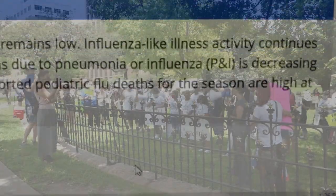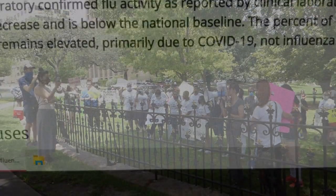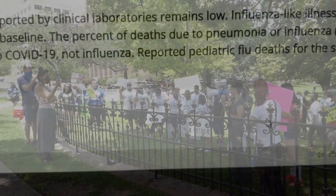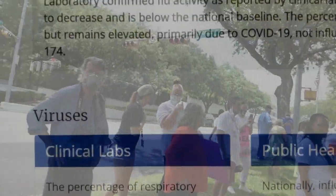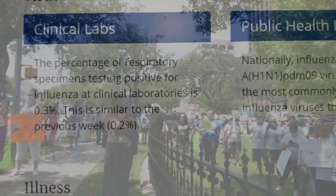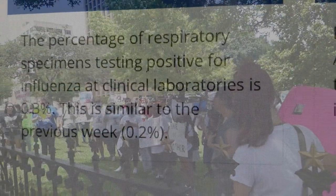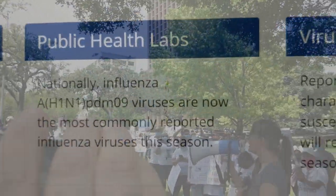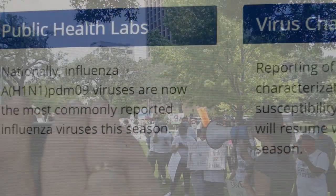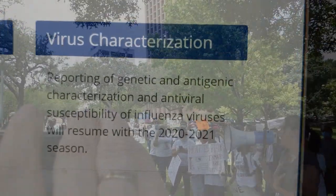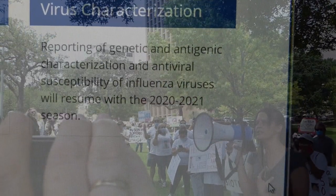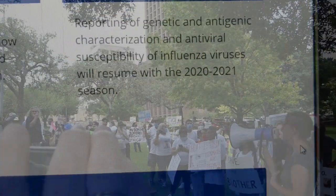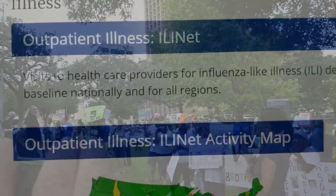The percentage of deaths due to pneumonia and influenza (PNI) is decreasing but remains elevated, primarily due to coronavirus, not influenza. Reported pediatric flu deaths for the season are high at 174. Clinical labs show the percentage of respiratory specimens testing positive for flu is 0.3%, similar to the previous week's 0.2%. H1N1 is the most commonly reported virus this year. Reporting of genetic and antigenic characterization and antiviral susceptibility of influenza viruses will resume in the 2020–2021 season.